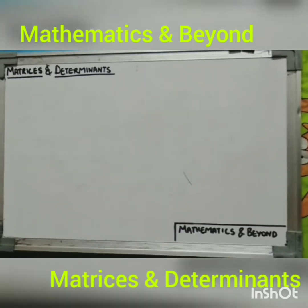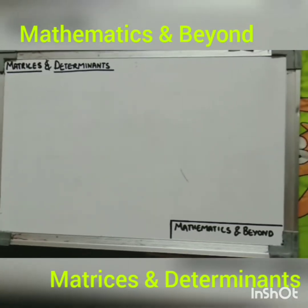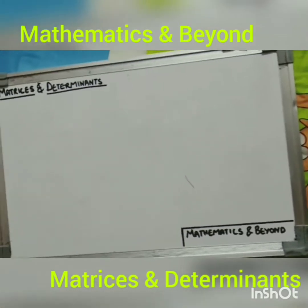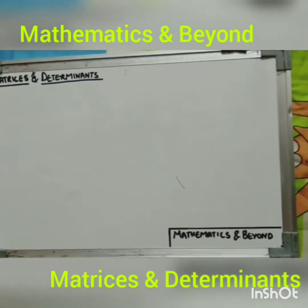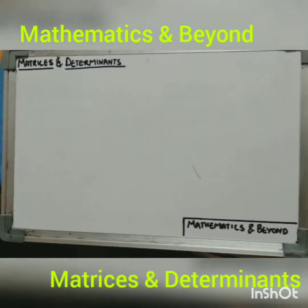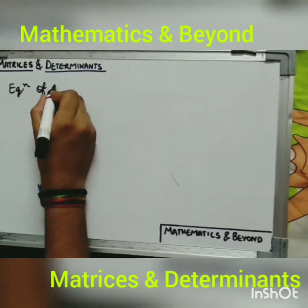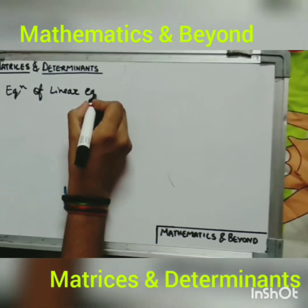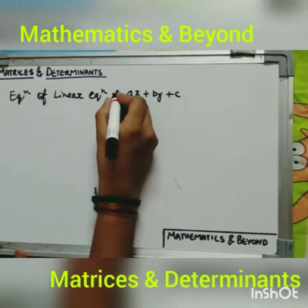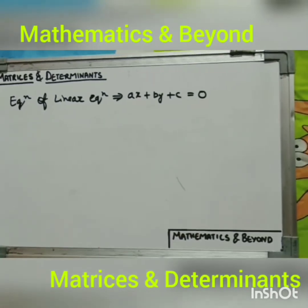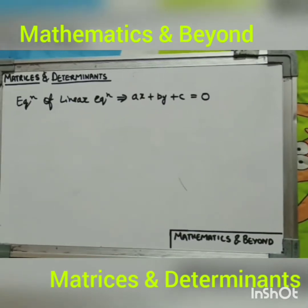Before starting matrices and determinants, let us go into flashback. Let us remember what we learned in class 10th. In class 10th we learned chapter number three of class 10 mathematics — that is a system of linear equations in two variables — in which we saw that the general equation of a linear equation in two variables is of the form ax plus by plus c is equal to zero.